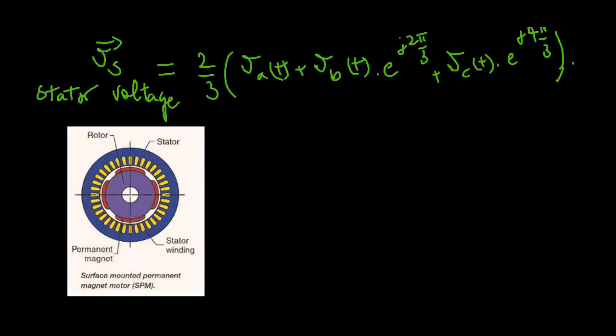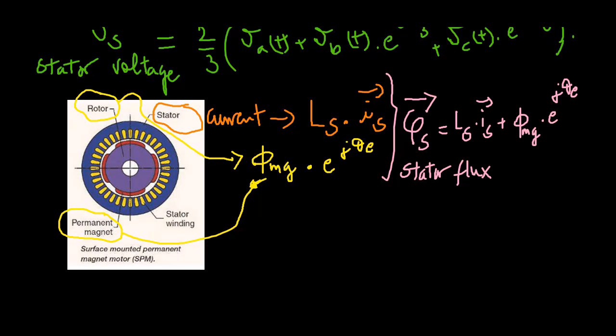When a surface mounted PMSM is considered, the space vector of stator flux consists of two parts. One is produced by the stator current, while the other is produced by the permanent magnets of the rotor.